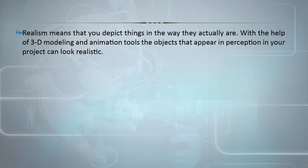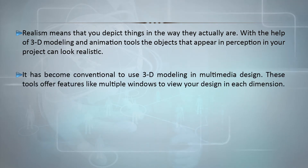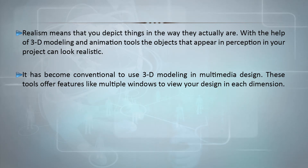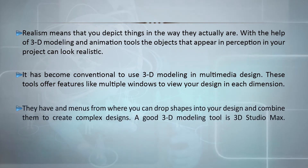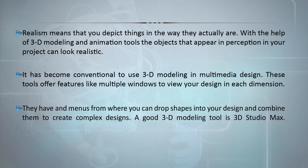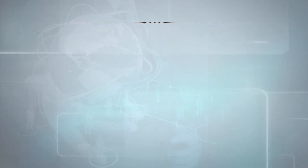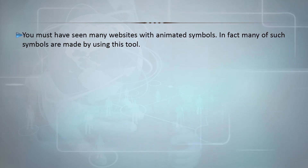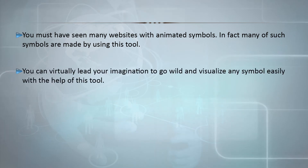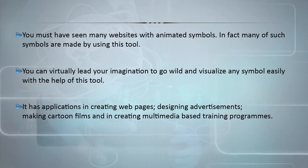With the help of 3D modeling and animation tools, objects that appear in your project can look realistic. It has become conventional to use 3D modeling in multimedia design. These tools offer features like multiple windows to view your design in each dimension, and venues from where you can drop shapes into your design and combine them to create complex designs. A good 3D modeling tool is 3D Studio Max, which is a tool for making 3D models and designs that can be converted into three-dimensional animations. You must have seen many websites with animated symbols — many are made using this tool. It has applications in creating web pages, designing advertisements, making cartoon films, and creating multimedia-based training programs. One can give special effects to the design especially in terms of sound and animation.